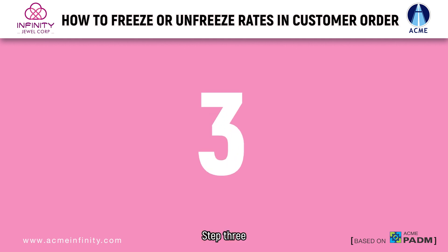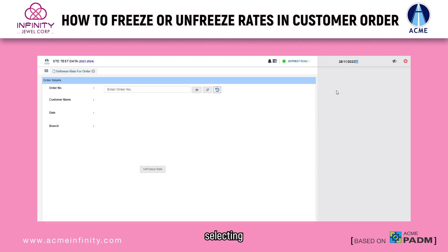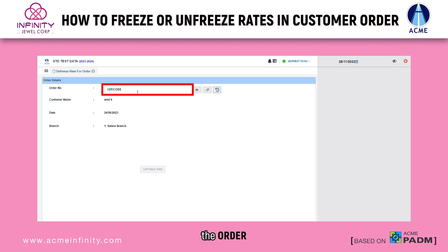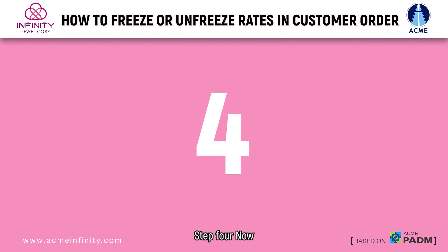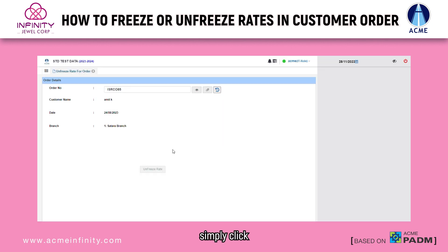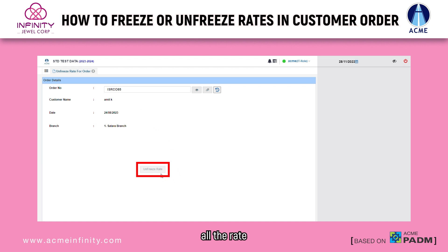Step 3: After selecting the option, enter the order number in the required field. Step 4: Now simply click on either freeze or unfreeze order rate based on your requirement.